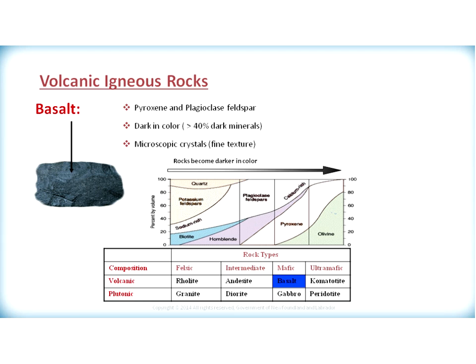The third volcanic rock we look at is basalt. Basalt is primarily a mafic igneous rock and can be composed of minerals pyroxene and plagioclase feldspar. It is generally dark in color and generally has greater than 40% dark minerals. Again, it has a microscopic crystalline structure, so you cannot see the minerals with the naked eye, and it has a fine texture.